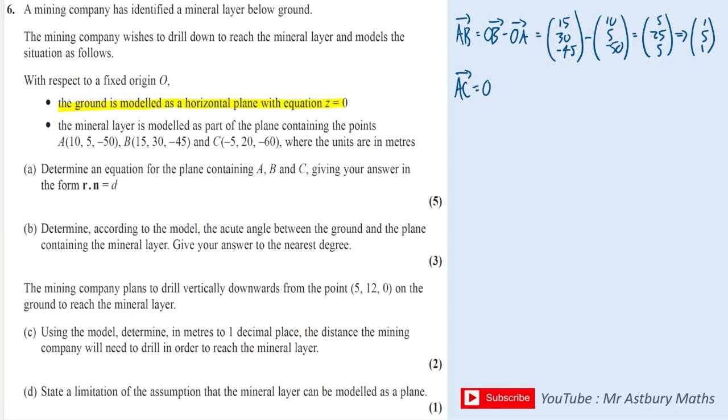Now we need to find another vector. So I'm going to do A to C this time, which is C minus A, which is (-5, 20, -60) minus A. And that will give me (-15, 15, -10). Again, I'm only interested in the direction of this vector. I'm not interested in the magnitude. So I can just simplify it down by dividing through by 5, and I would get this.